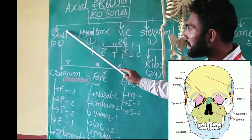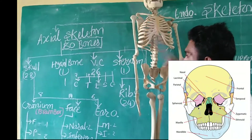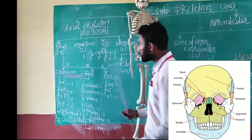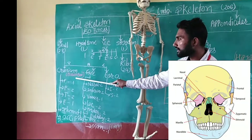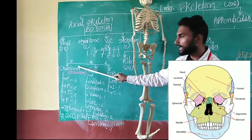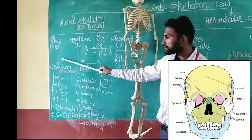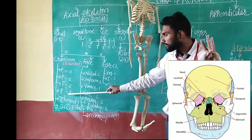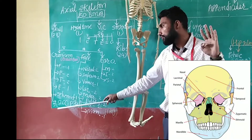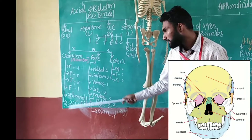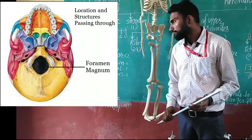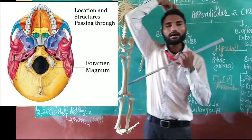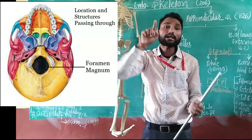The axial skeleton is divided into five categories. The first is the skull, with a total of 28 bones. In the skull we talk about the cranium — the cranium covers the brain. The cranium bone protects the brain.